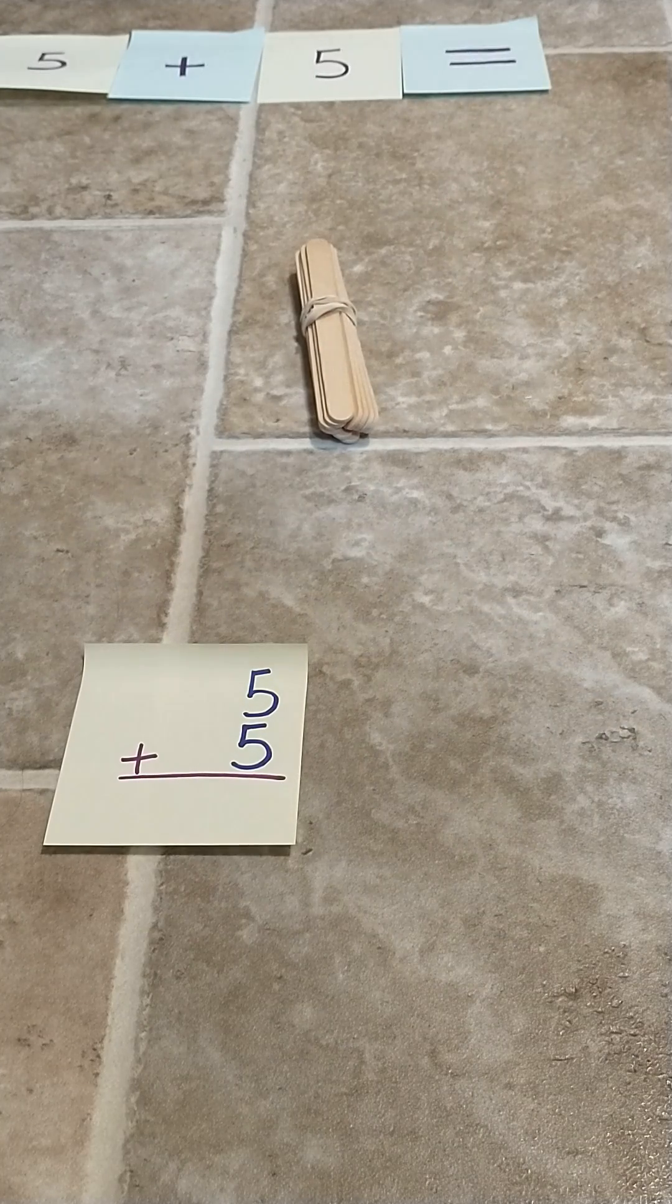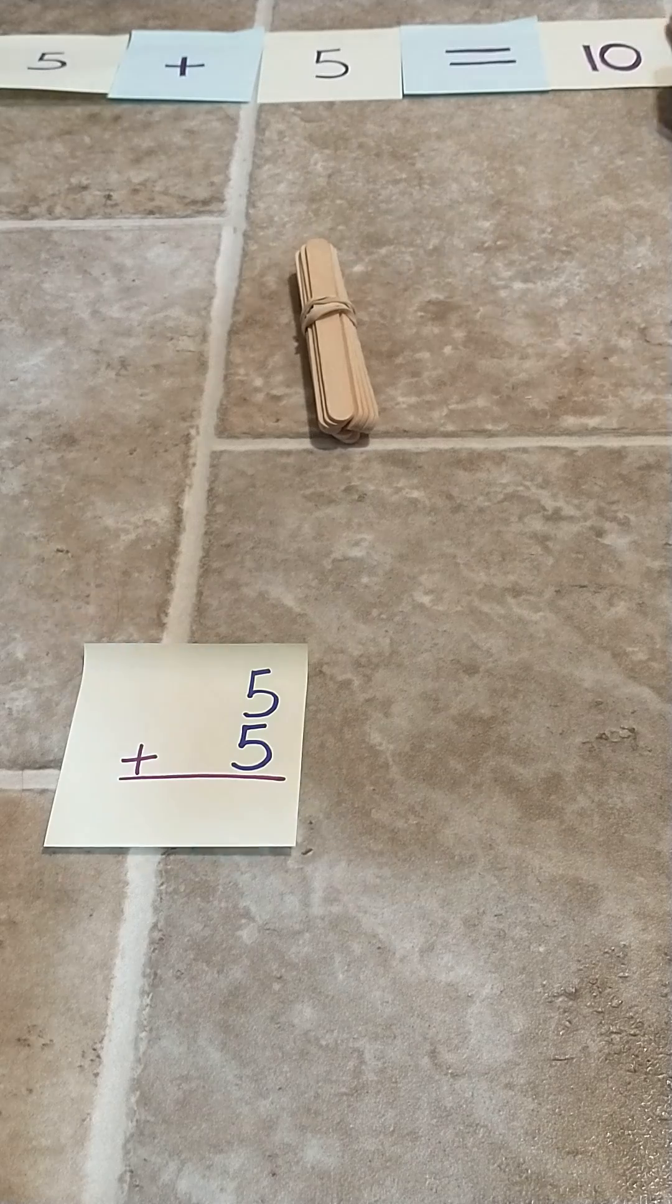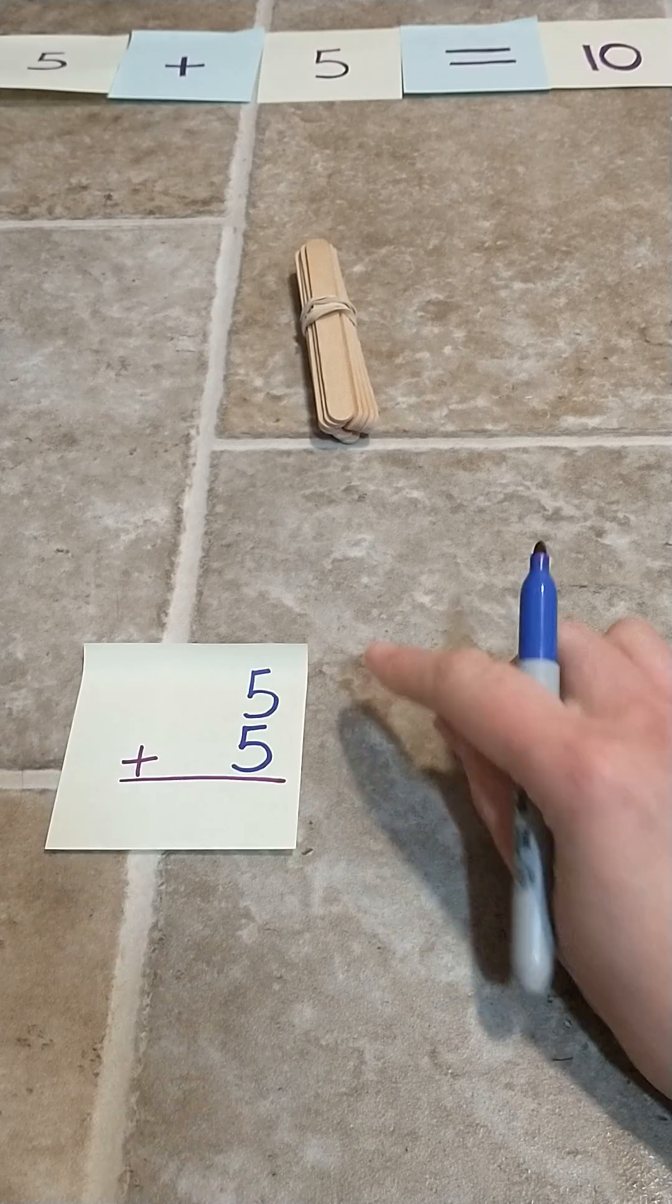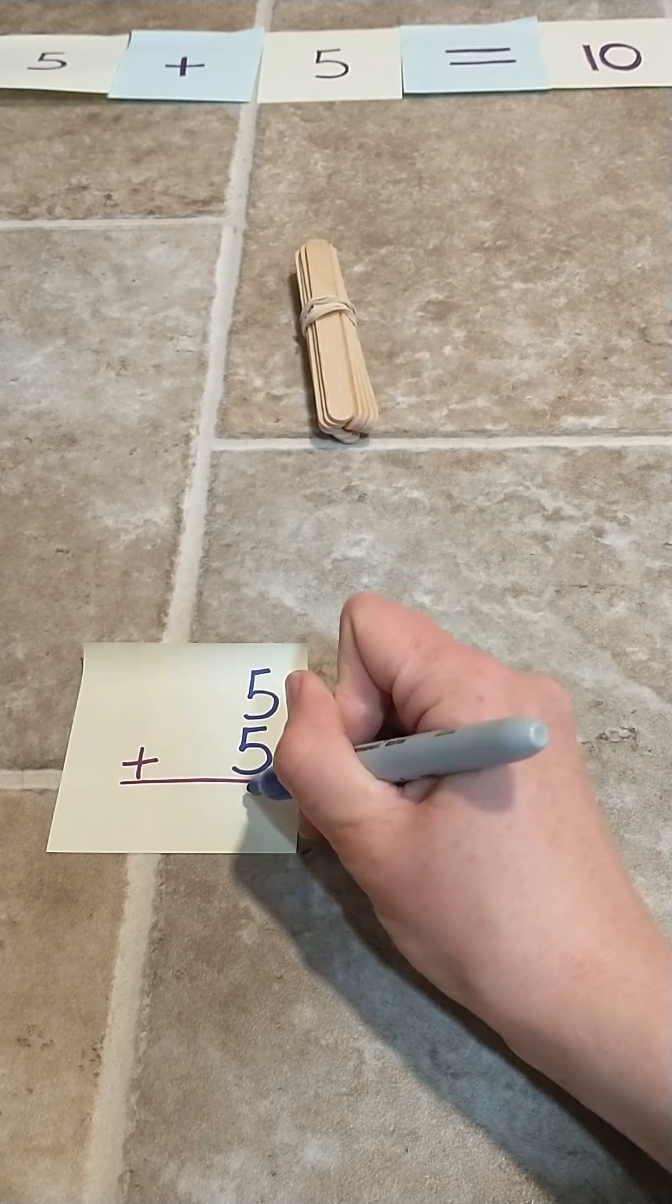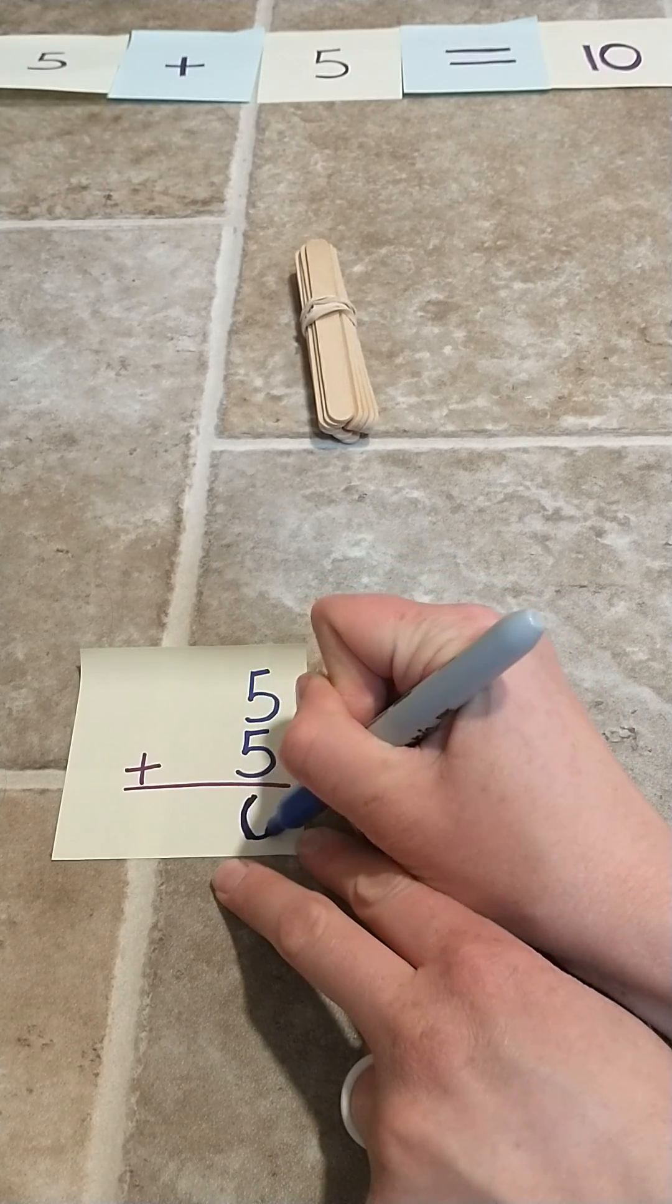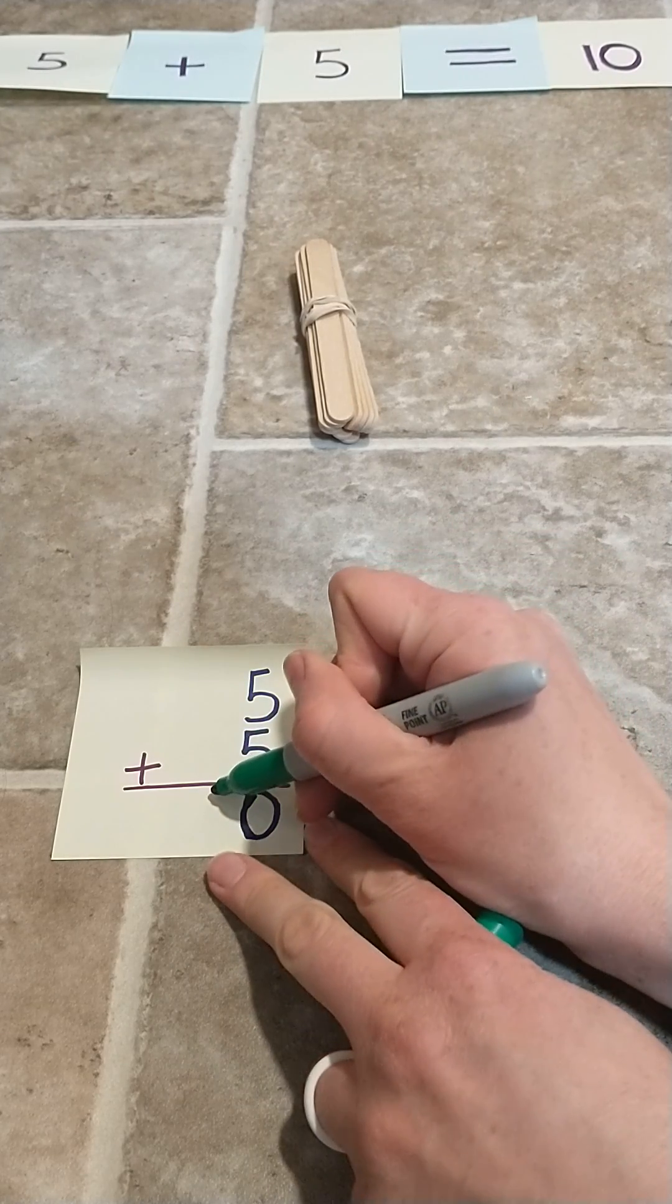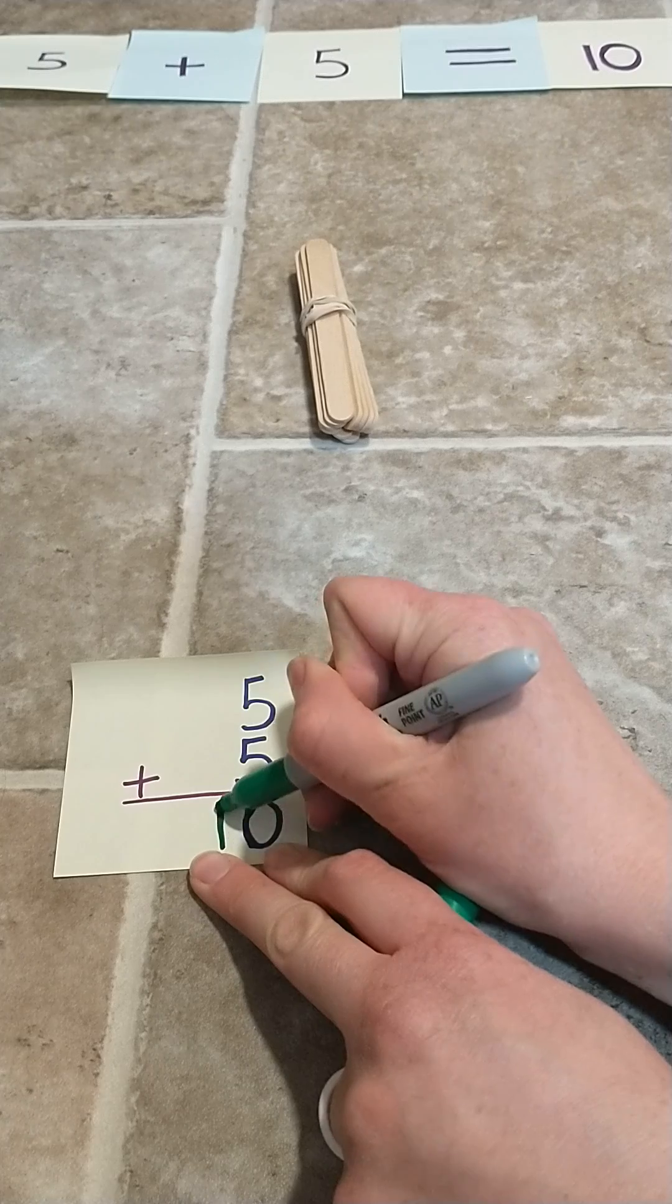And write the number ten. Down here we're doing five plus five equals ten. We end up with a zero in the ones spot and a one in the tens spot. I'm going to write that in a different color because it represents ten.